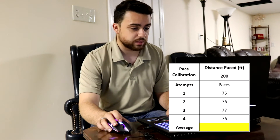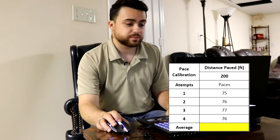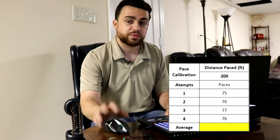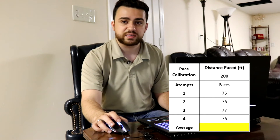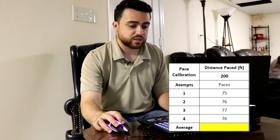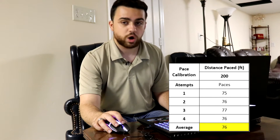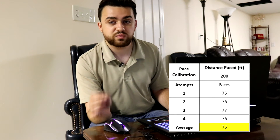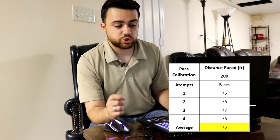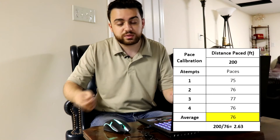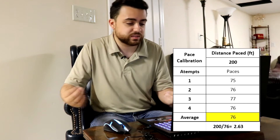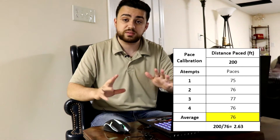Welcome to the office. We're going to look at all the data collected and figure out our error. From the calibration: first attempt was 75 paces, second was 76, third was 77, fourth was 76 — averaging approximately 76 paces per 200 feet. That means our scale factor is 2.63, meaning for every pace we take, we're traveling 2.63 feet. This is what we'll use to convert between paces and feet.